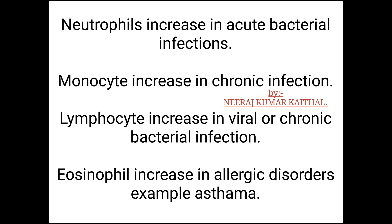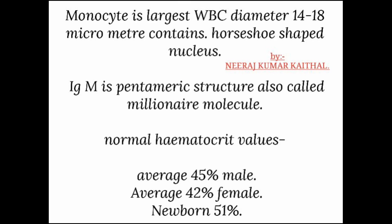Neutrophils increase in acute bacterial infection. Monocytes increase in chronic infection. Lymphocytes increase in viral or chronic bacterial infection. Eosinophils increase in allergic disorders such as asthma. Monocyte is the largest WBC, with a diameter of 14 to 18 µm, and contains a horseshoe-shaped nucleus.